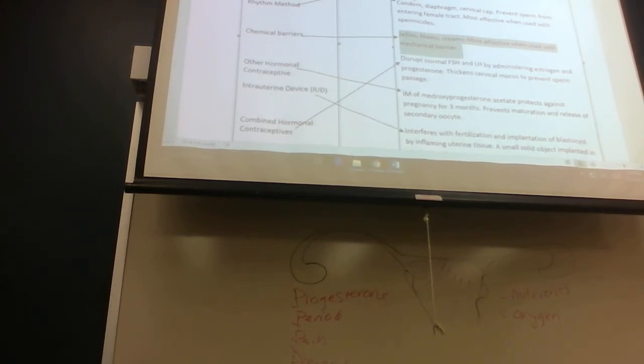Chemical barriers. Typically used with mechanical barriers. Jellies, foams, creams. These are the spermicides. Other hormonal contraceptives include intramuscular medroxyprogesterone acetate. This protects against pregnancy for three months. It prevents the maturation and release of secondary oocyte. It suppresses follicle-stimulating hormone.